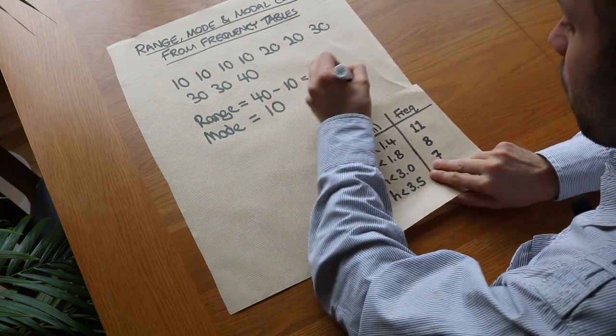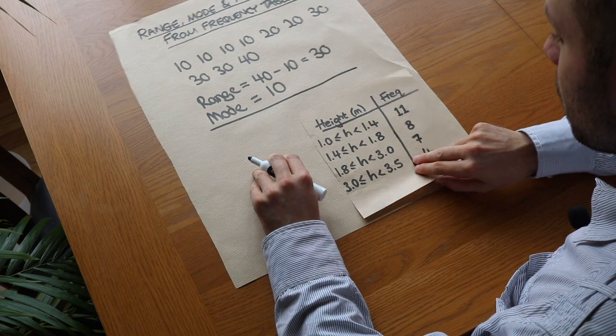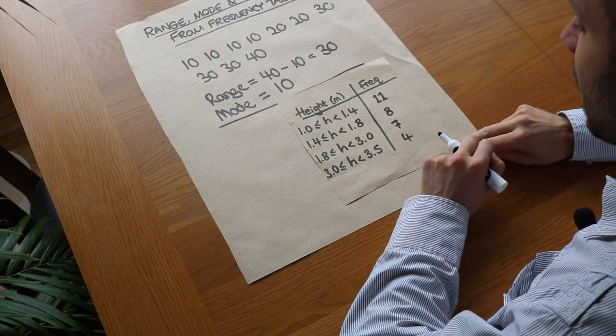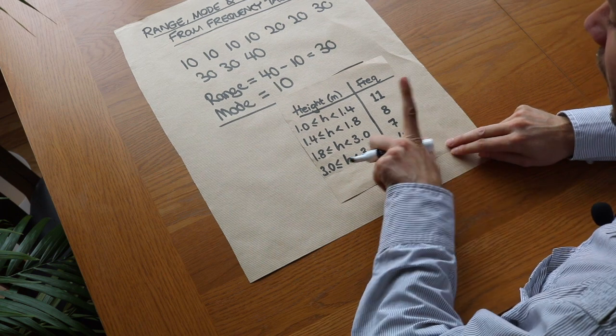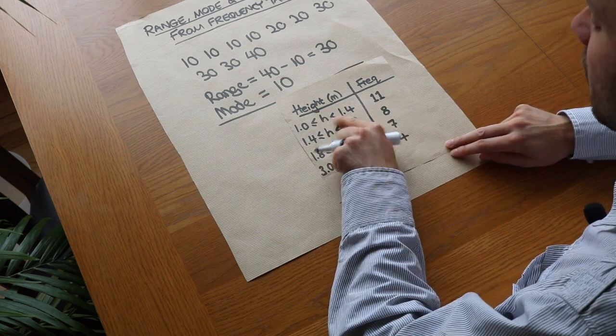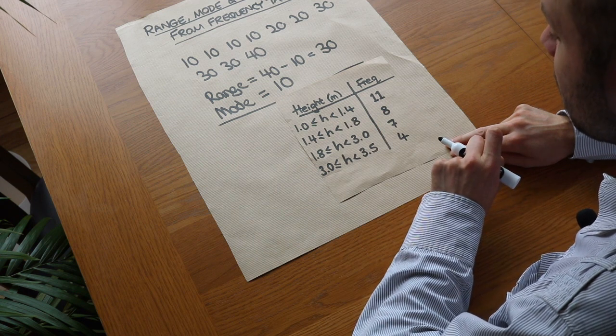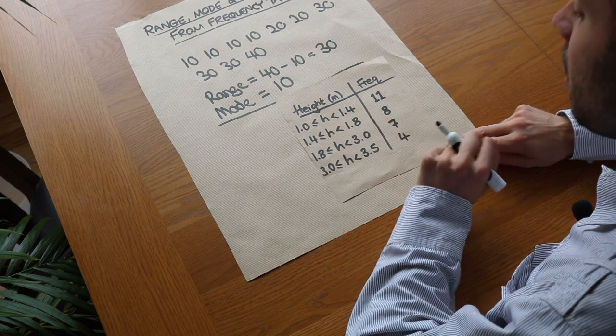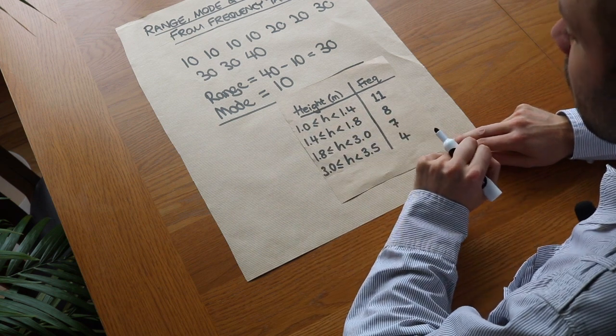What about this? We've now got a grouped frequency table. What about the range? Now, we can't actually work out the range, and the reason is because we don't actually know the heights of these people. We know that 11 people had a height between 1.0 and 1.4 metres, but we don't know what those exact heights were within that interval, so in fact it's impossible to work out the range.